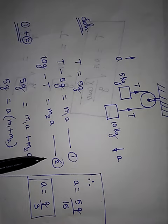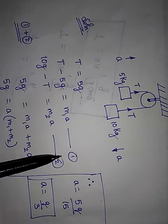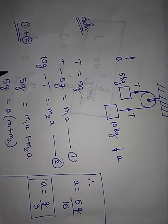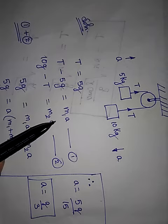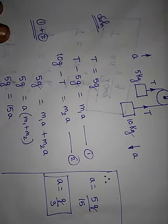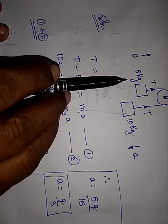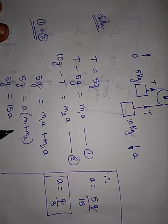Now, we call this as equation 1 and this as equation 2. You add both the equations. T, T gets cancelled. 10G minus 5G will give you 5G. Here we are adding both the equations. Right hand side. M1A plus M2A. A is common. M1 plus M2. M1 is 5 kilogram. M2 is 10 kilogram. If you add, it will get 15 kilogram. Then you have A.